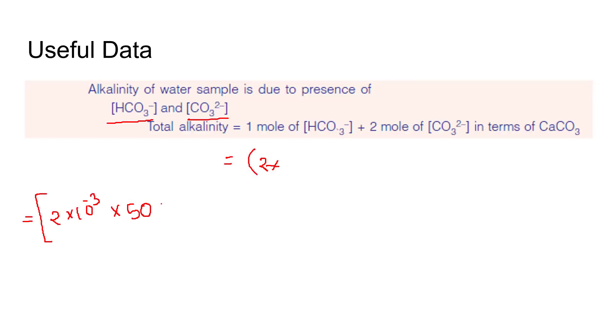After that, 2 moles of this carbonate ion: 2 into 3.04×10^-4, this is the concentration, into the atomic weight. The atomic weight of CaCO3 is 50 because we are mentioning in terms of calcium carbonate.